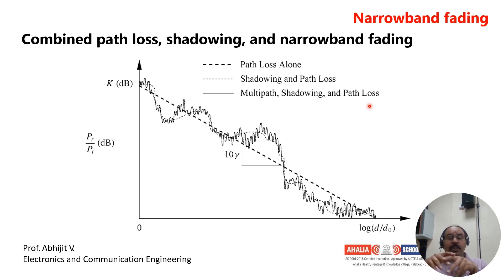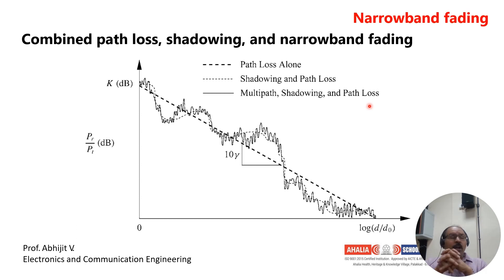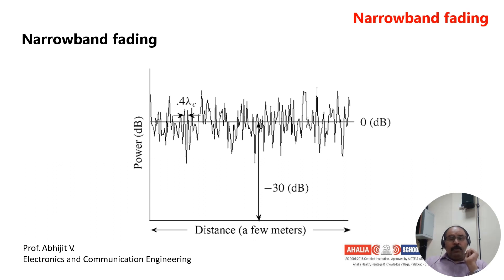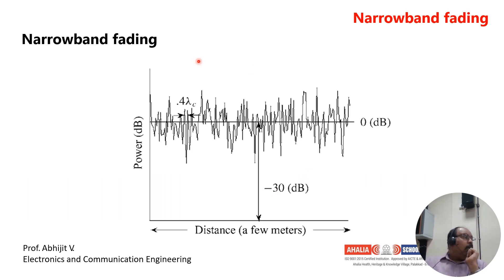Here we have graphically represented the three main path losses: first, free space path loss alone; second, shadowing and path loss; and third, multipath plus shadowing plus path loss. The graphical representation shows the change in power in dB by distance relative to the reference point d0. In the case of narrow band fading, you can see that over a few meters the variation in power is comparatively lower, representing the carrier wavelength.